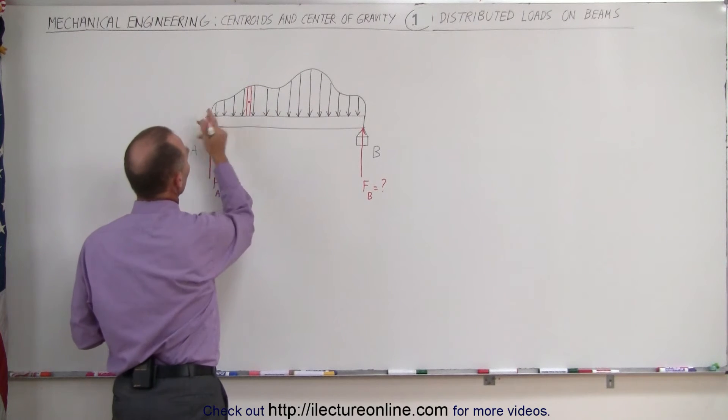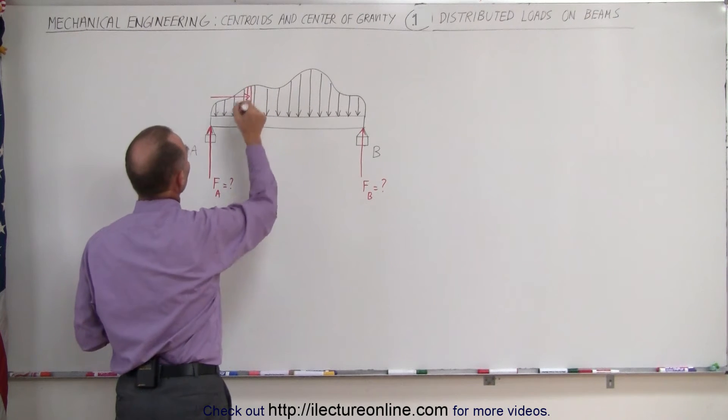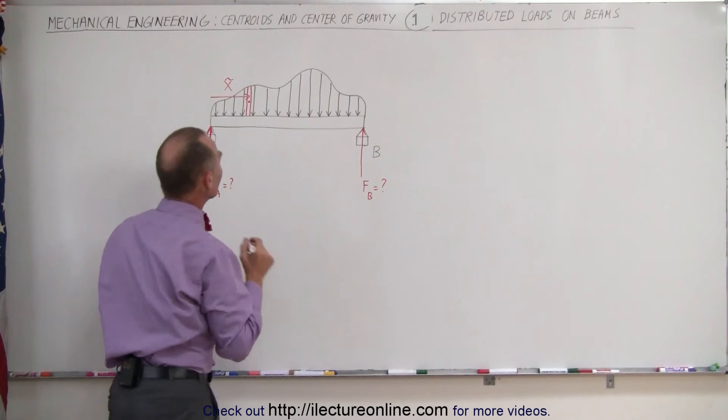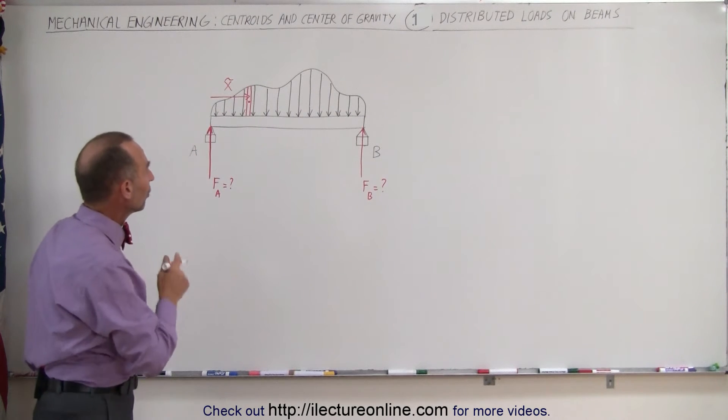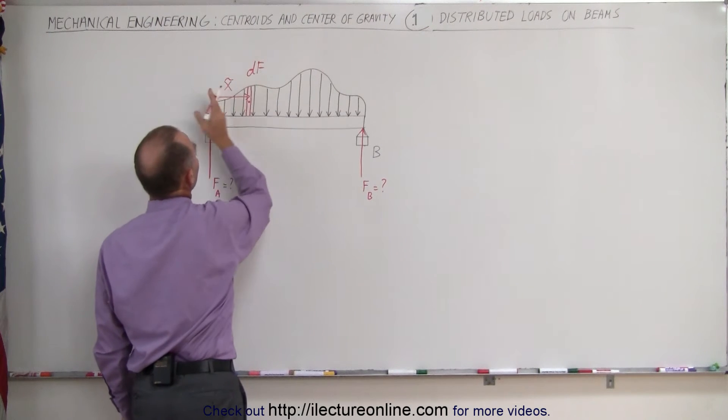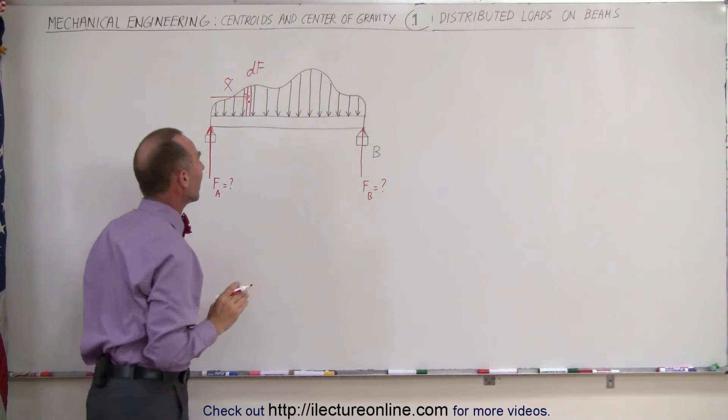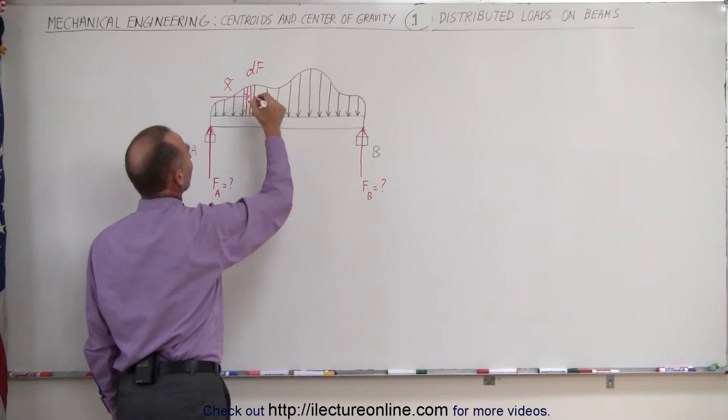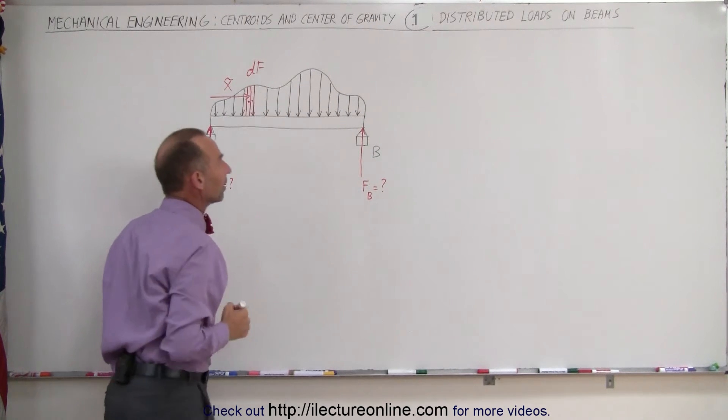That would be the centroid relative to, let's say, from point A to that particular point. Let's call that the centroid of that small little force, so that's a small df acting at a distance x away from point A. And then we find the force right next to that and again we find the centroid there and the force next to that centroid there.